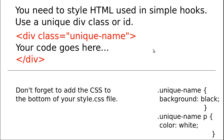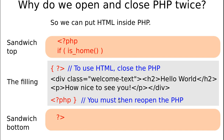If you put your own code in, wrap it in a div and give the div a unique class or ID name. Make the name unique because if it's not, it'll clash with other bits of code. Don't forget to add the CSS to the bottom of your style.css file. You need your HTML with a class, so your code would be wrapped in this div, and then add your CSS to the bottom of style.css.